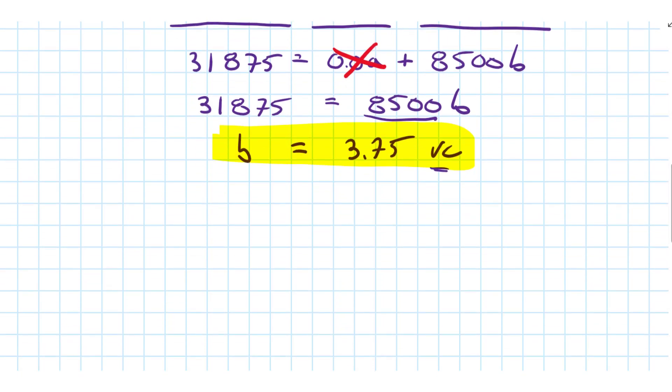I'll now say that 81,900 is equal to a plus 10,000 units multiplied by the variable cost which is 3.75. Order of operations, do the multiplication first.